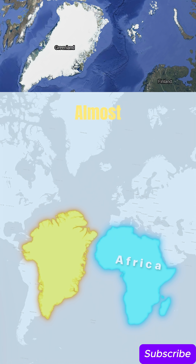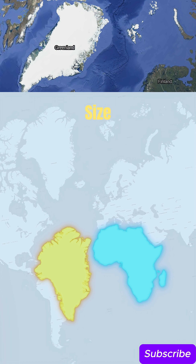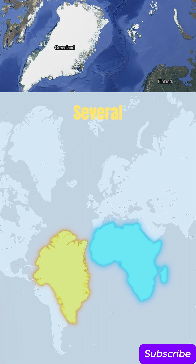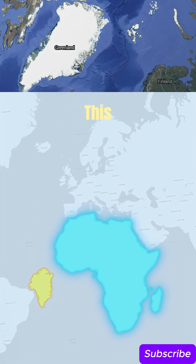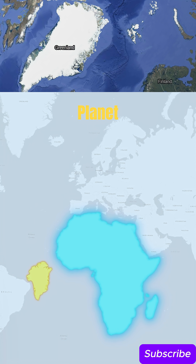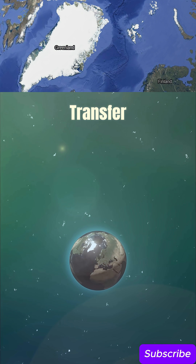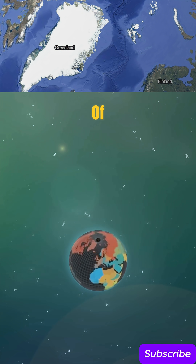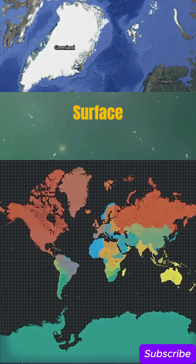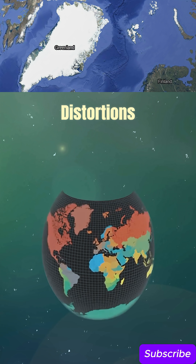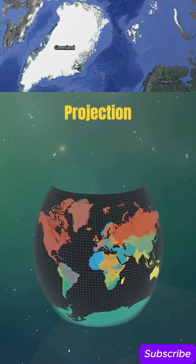We can see that they are almost the same size, but the real size of Greenland is several times smaller than Africa. This is because our planet is round, and it is impossible to transfer the surface of a sphere to a flat surface without a series of distortions. It's called projection.